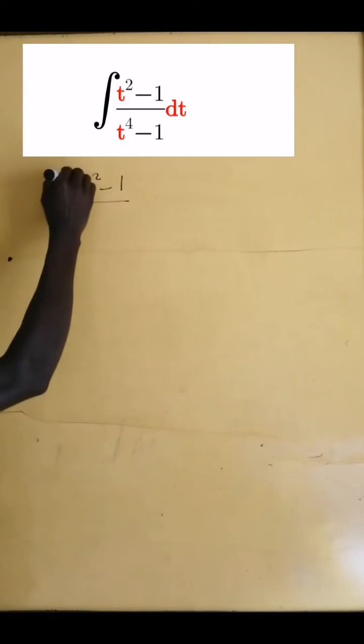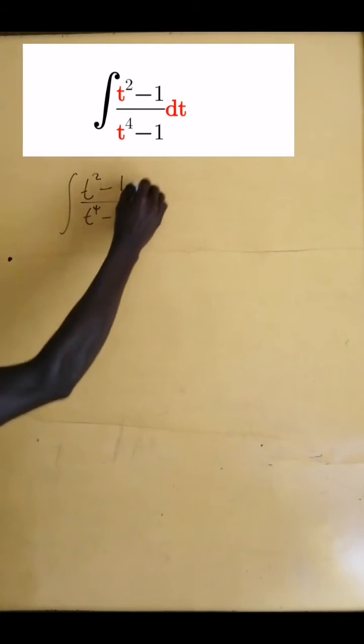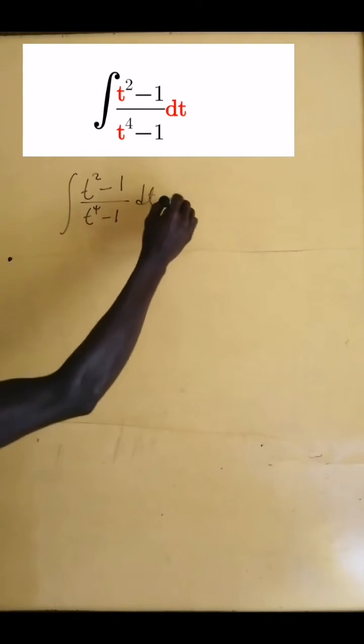Now we have the integral t squared minus 1 all divided by t to the power 4 minus 1 dt.